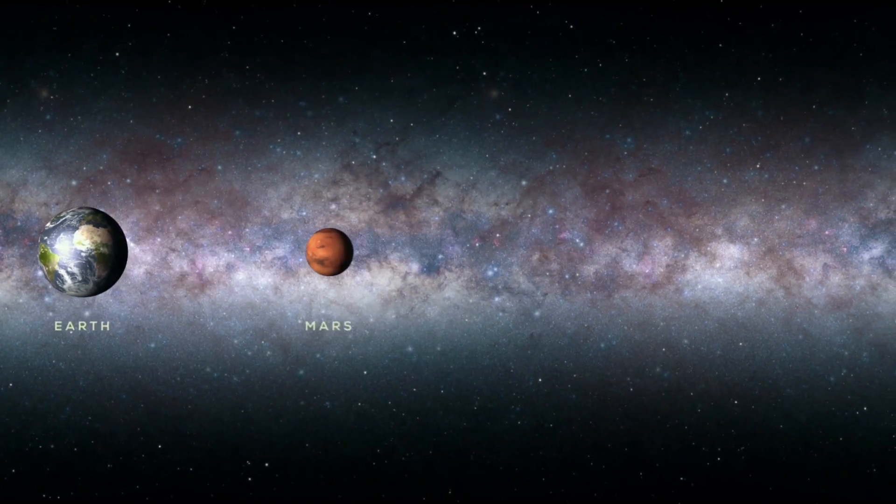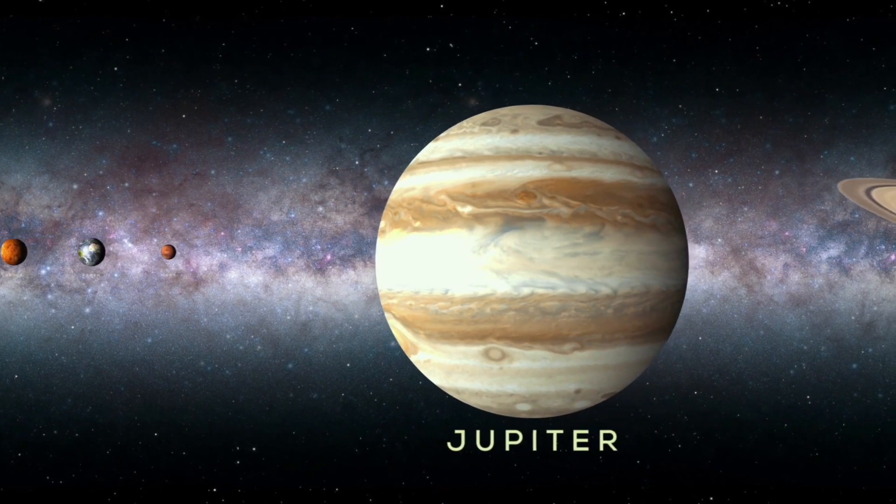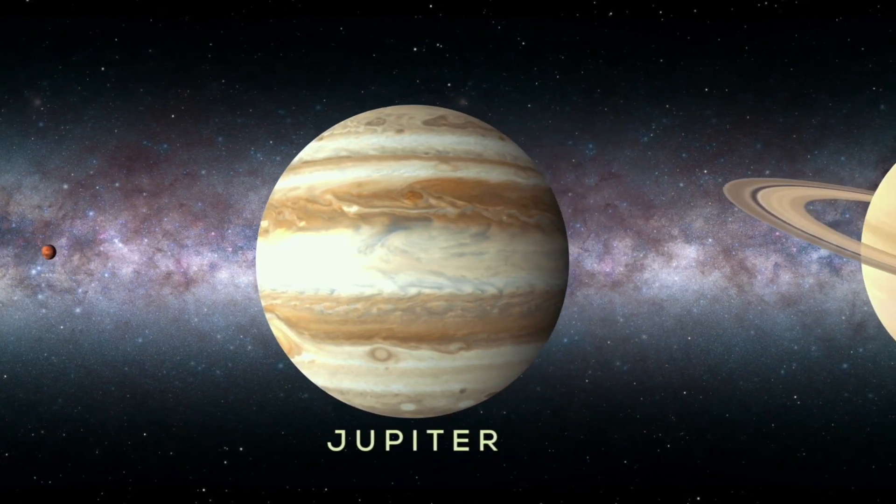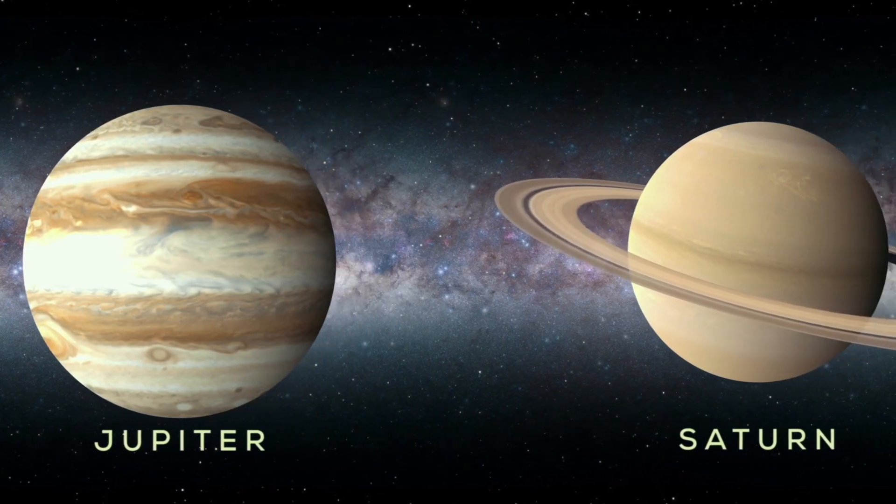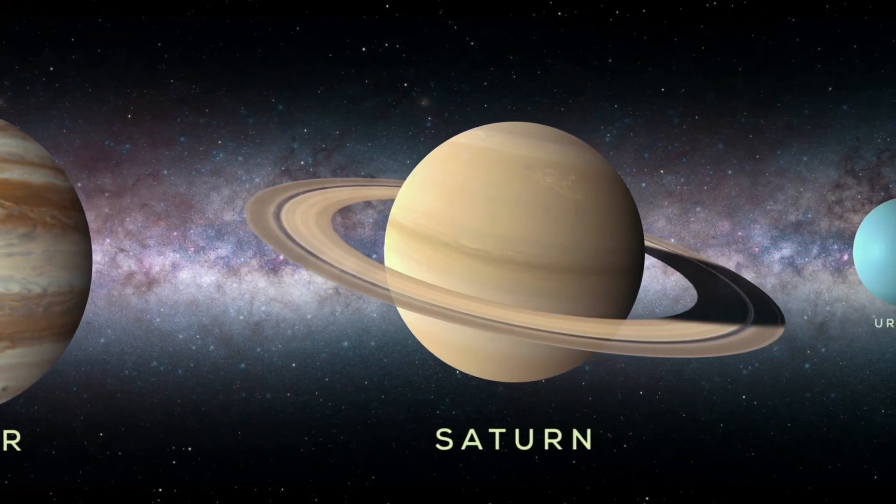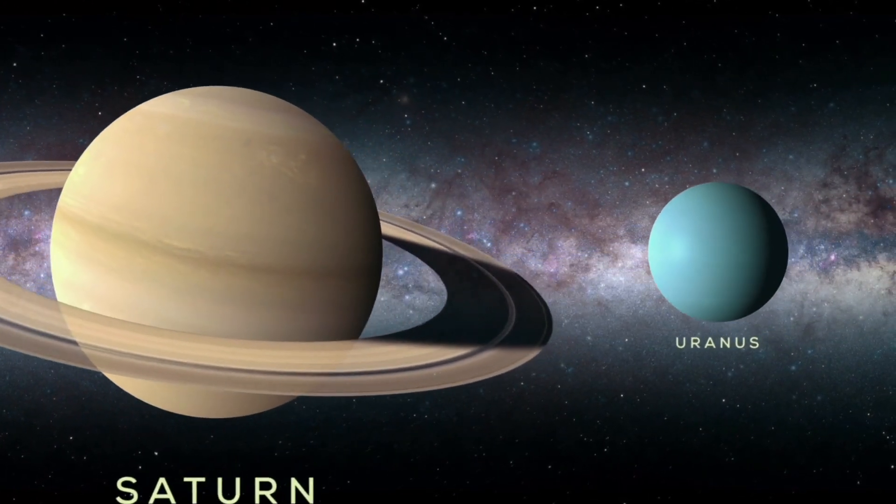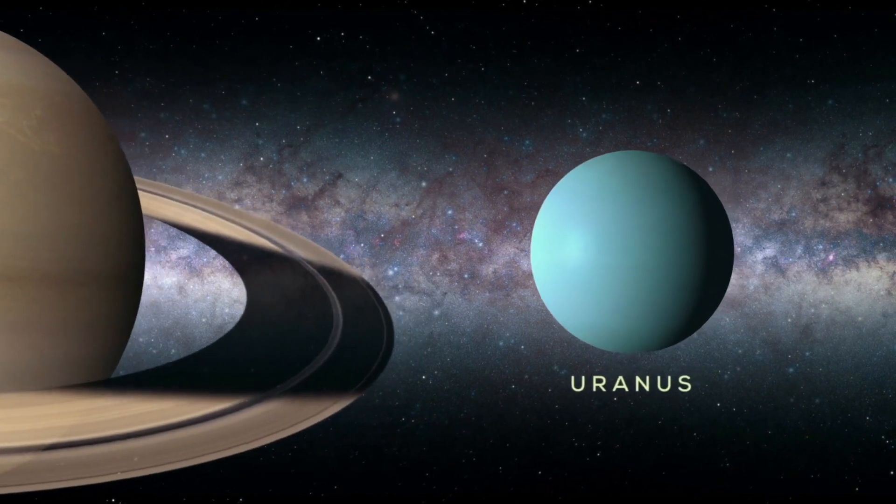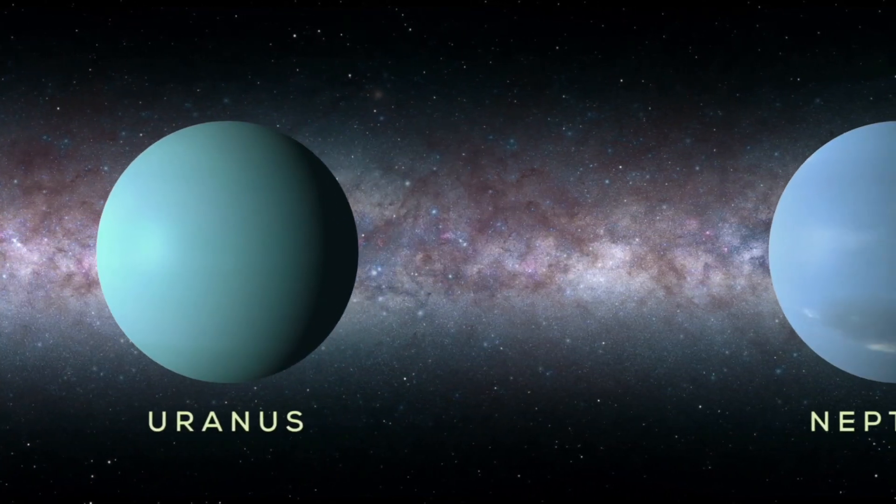We then have a ring of asteroids before we reach the larger gaseous planets of Jupiter which is the biggest planet in our solar system, then the ring planet of Saturn, Uranus and then finally Neptune.